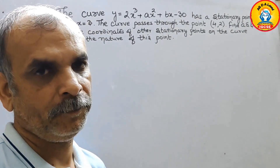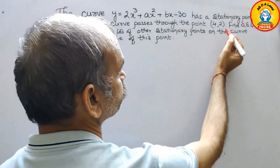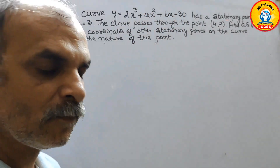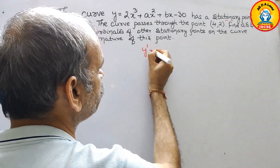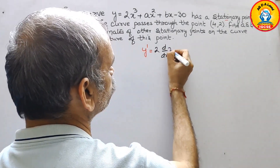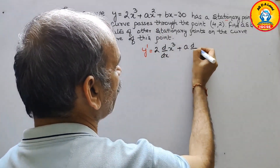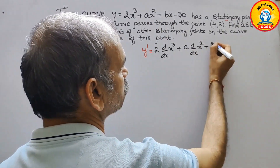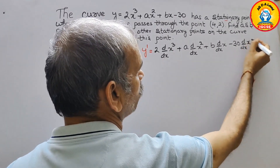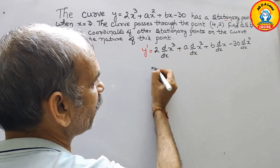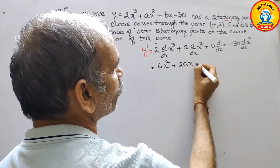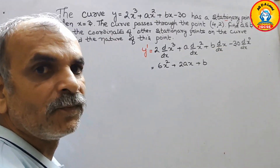First we have to find a and b. Since there is a stationary point, we need to differentiate. y' equals 2·(d/dx of x³) plus a·(d/dx of x²) plus b·(d/dx of x) minus 30·(d/dx of x⁰). Differentiating, we get 6x² plus 2ax plus b.